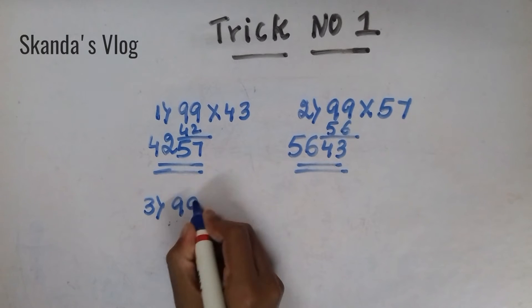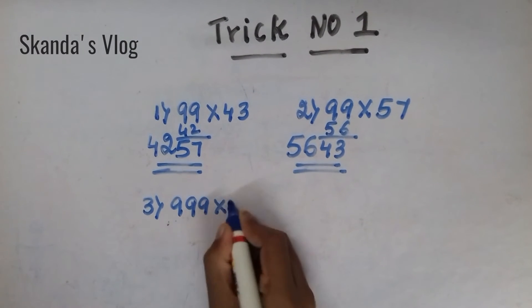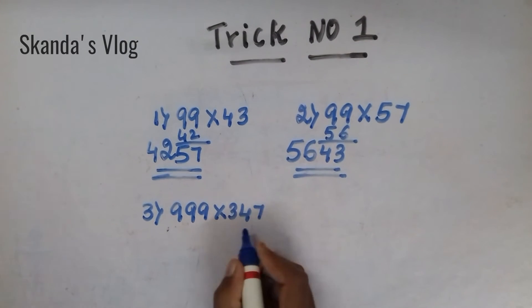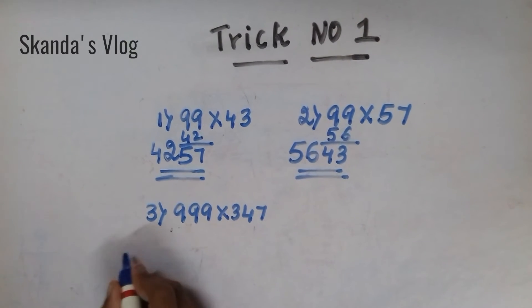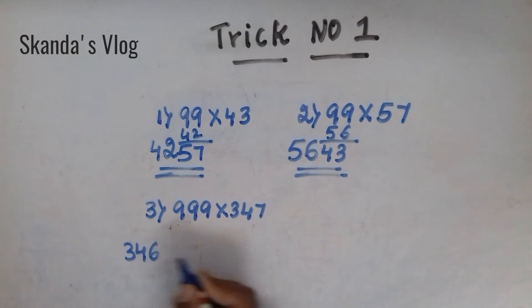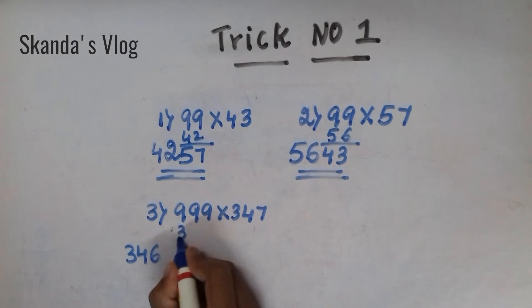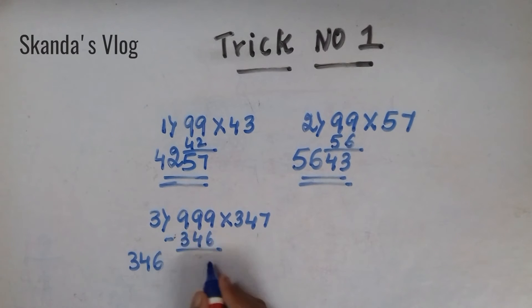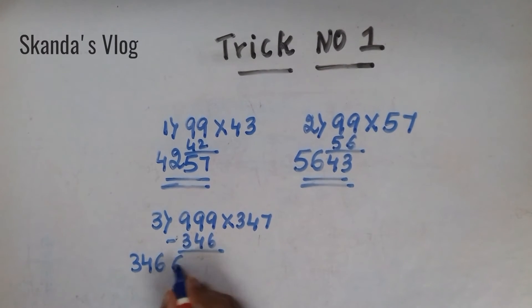Now, the 3 digit number. Same trick. 3, 4, 6. Make 1 digit less and subtract it from the same number. You will get the answer.